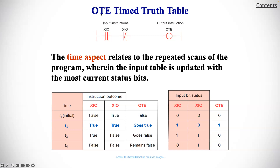The OTE timed truth table covers the timed aspect, where it relates to the repeated scan of the program, where the input table is updated with the most current status bit.